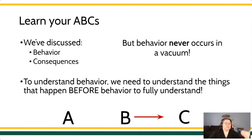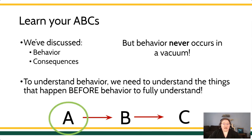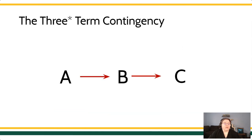Antecedents are the stuff that happens before behavior that can set the occasion for that response. The antecedent then influences whether or not the behavior occurs. Throughout this entire topic, we're going to be talking about antecedents and the context around behavior. Sometimes you'll hear behavior analysts refer to something called the three-term contingency, which refers to the antecedent or context where the behavior occurs and the circumstances surrounding the behavior.